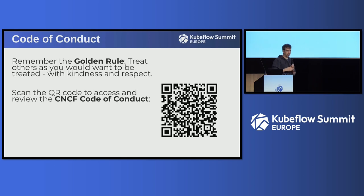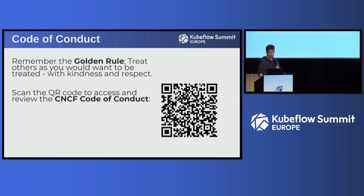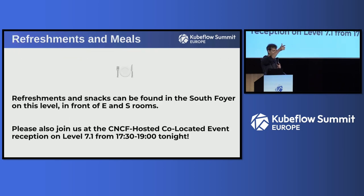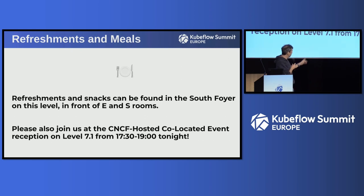A few reminders before we kick things off. There is a code of conduct — the golden rule: treat others as you would like to be treated. There's also a QR code for more information. Captioning and translation are available via QR code. Refreshments and meals are just behind. And tonight we have the co-located event reception from 5:30 to 7 p.m. downstairs at level 7.1 — please join us to continue the discussion.